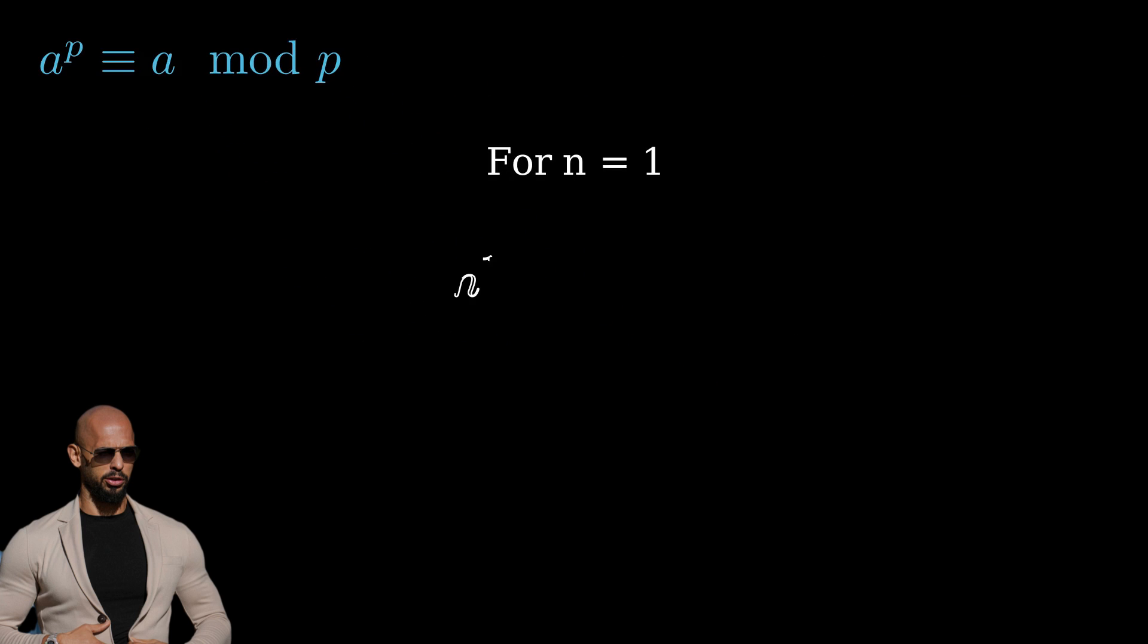For n equals 1, n to the 17 minus n equals 0. Everything divides 0, so that's a dead end. But don't lose heart.